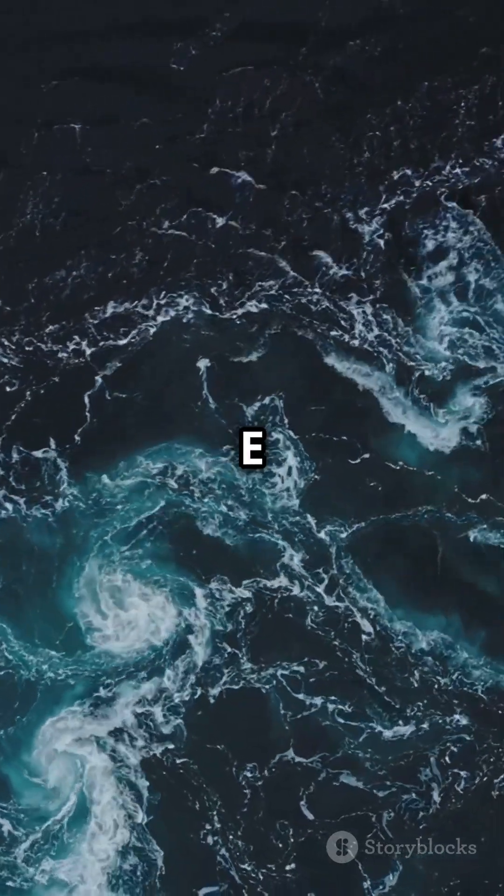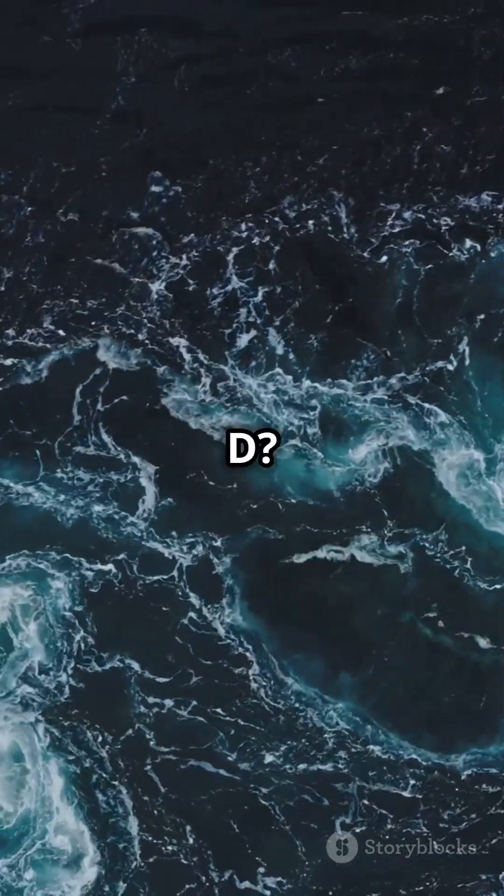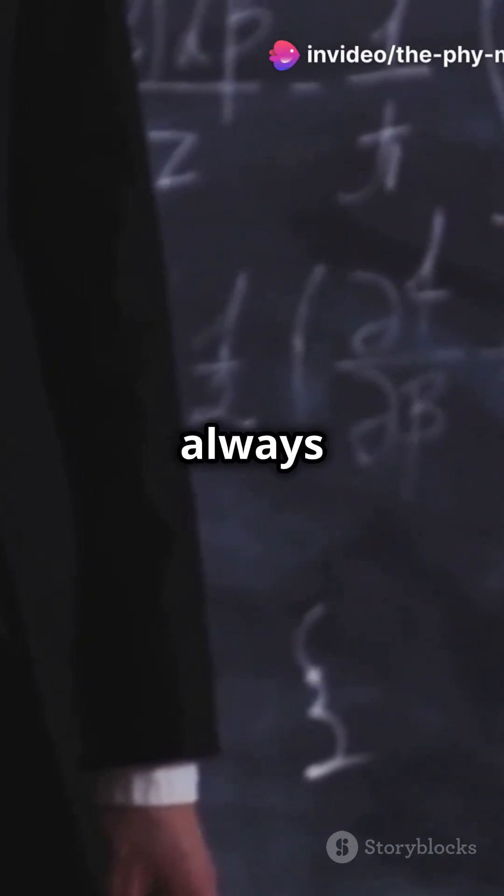For electrostatic fields, the curl of E is zero, but the curl of D? Not so much. ∇×D is actually ∇×P, and P's curl doesn't always vanish.